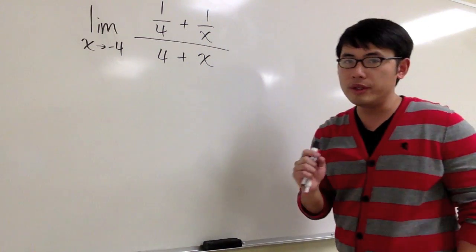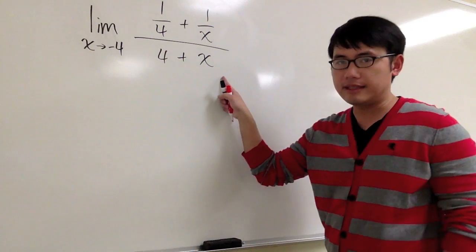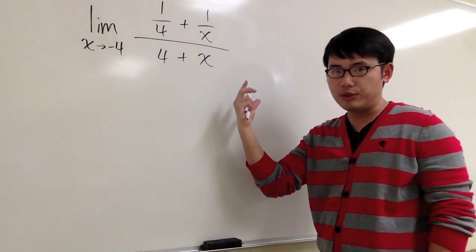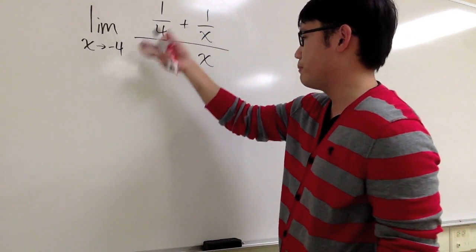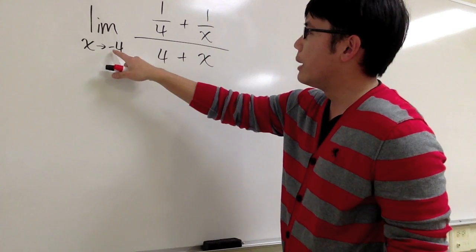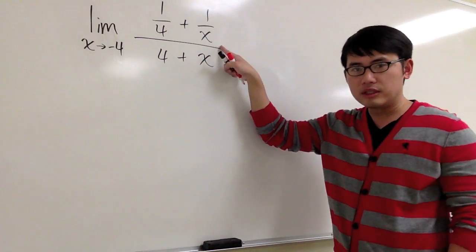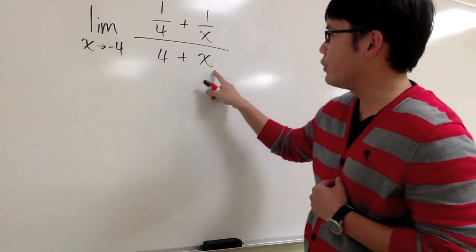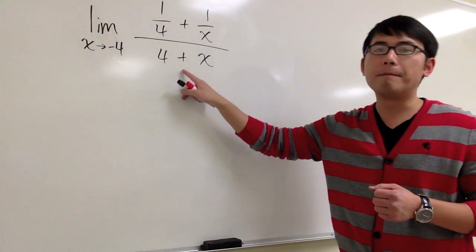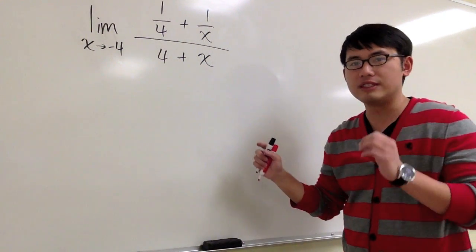As usual, what we need to do is plug in negative 4 into all the x and see what we get. Let me just do this without showing much work. Plug in negative 4 right here, you will get 1 fourth minus 1 fourth, so you have 0 on the top. Plug negative 4 into x, we get 4 minus 4. We also have 0 on the bottom.